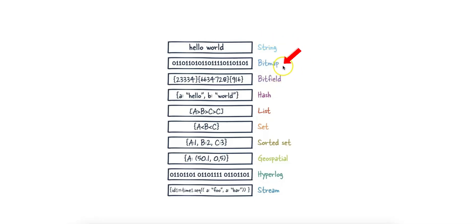There are options like a bitmap, bitfield, list, set, sorted set, geospatial, hyperlog, etc.